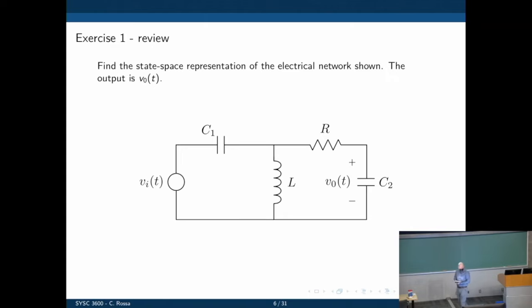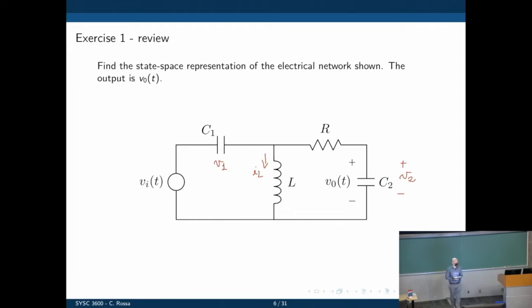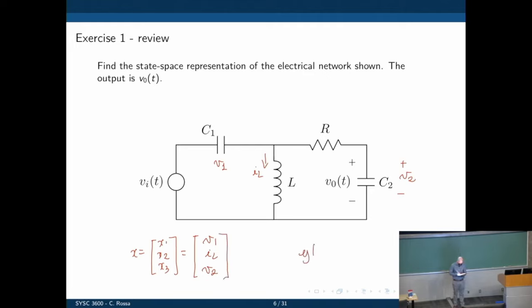As we just discussed, we can define our state variables as the voltage across the first capacitor — let's call that V1 — the current through the inductor IL as another state variable, and the voltage across the other capacitor as the third state variable V2. So our state vector X is [X1, X2, X3] = [V1, IL, V2]. The output of our system is V0, which turns out to be V2.